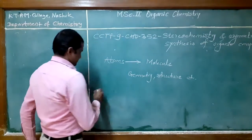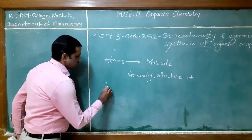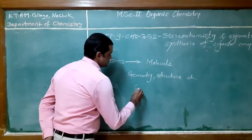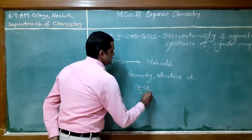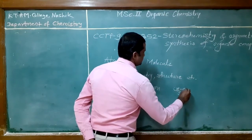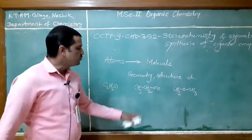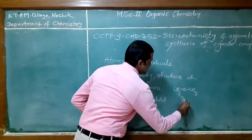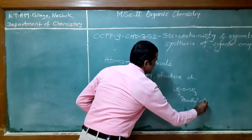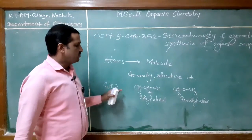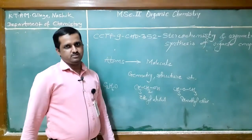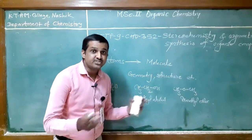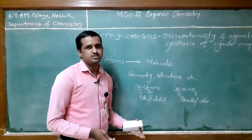For example, consider the molecular formula C2H6O, which has two compounds: one is CH3CH2OH — ethyl alcohol — and another is CH3OCH3 — dimethyl ether. The molecular formula is the same, but they have two different structures with different properties. Ethyl alcohol is soluble in water, while dimethyl ether is insoluble in water.